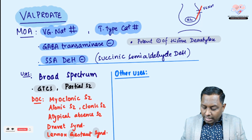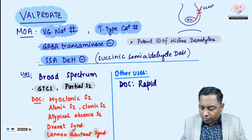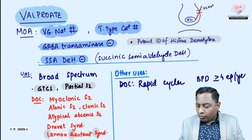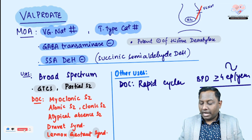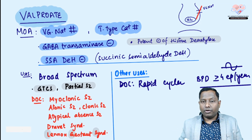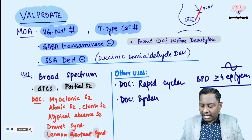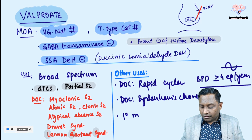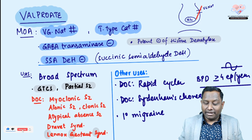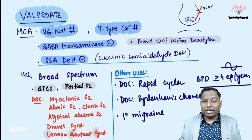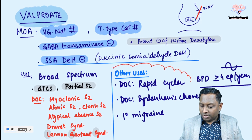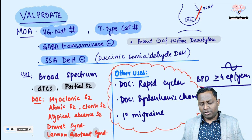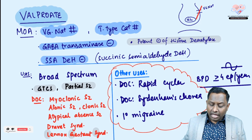Regarding non-epileptic uses: valproate is the drug of choice in rapid cycling bipolar disorder — a rapid cycler is a patient with four or more episodes (cycles of mania and depression) per year. It is also the drug of choice in Sydenham's chorea, and it is used for prophylaxis of migraine. Examiners frequently ask about non-epileptic uses of anti-epileptic drugs, so remember: rapid cycler, Sydenham's chorea, and migraine prophylaxis.